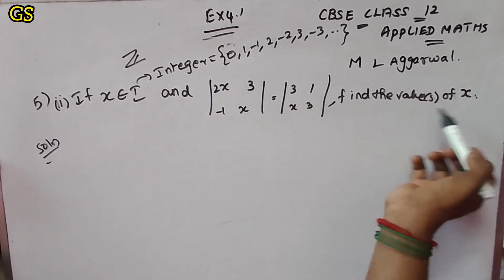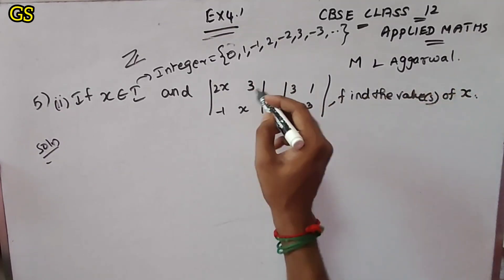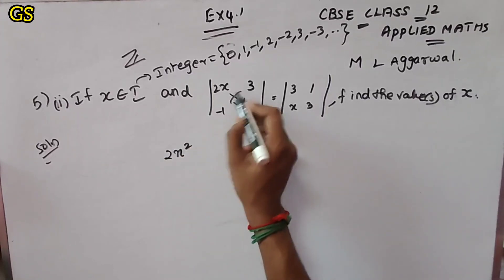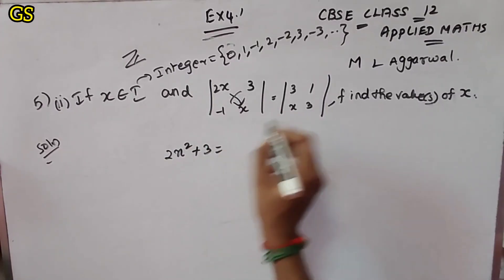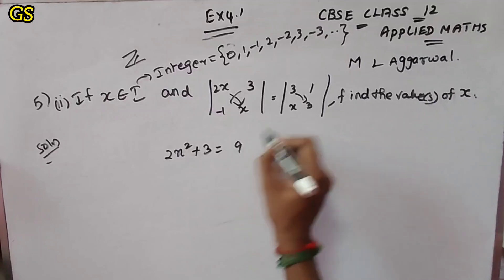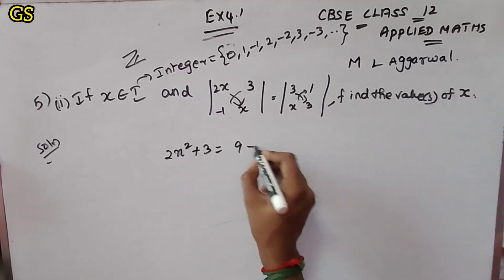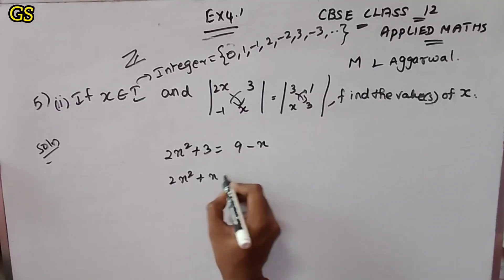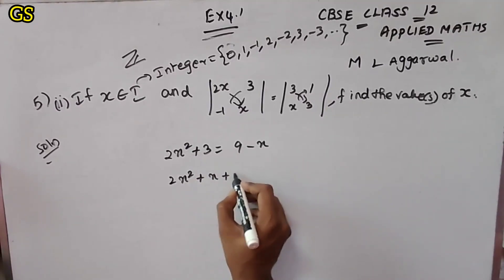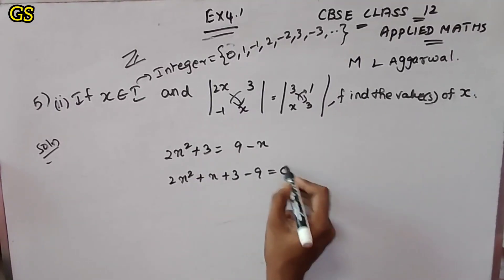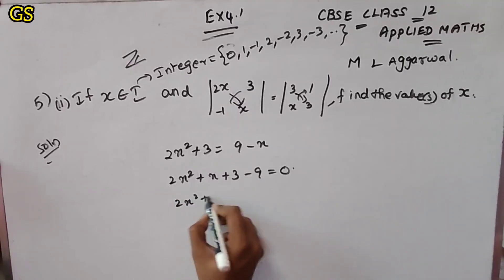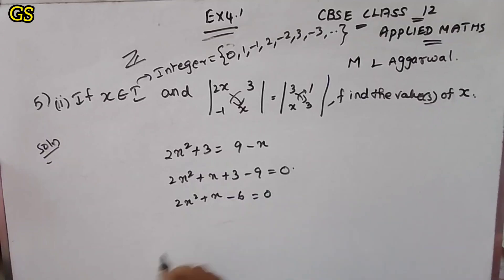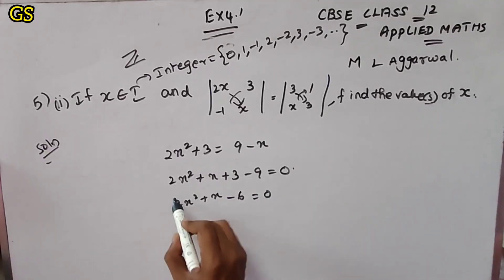Find the value of x. Setting up the determinant: 2x², minus 3, plus 3, this gives 9. x into 1, plus x, so minus x. So we get 2x² minus x plus x plus 3 minus 9 equal to 0. Simplifying: 2x² plus x minus 6 equals 0. Now we apply the quadratic equation by factorization.